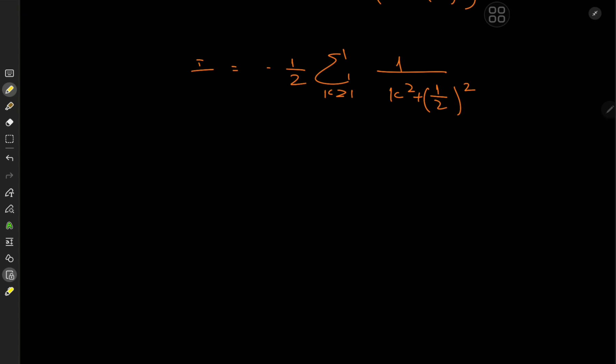And now to invoke one of my favorite infinite series results, and that is the sum over k from 1 to infinity of 1 over k² plus a² and this thing converges to π over 2a times hyperbolic cotangent of π times a minus 1 over 2a².